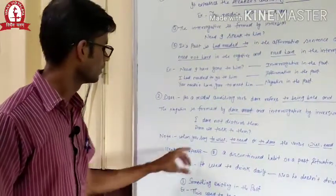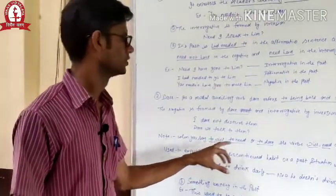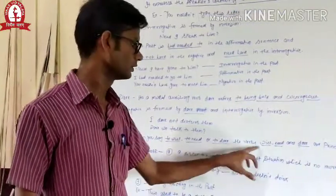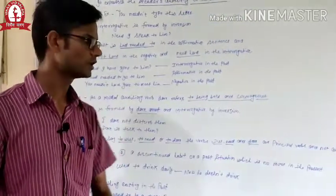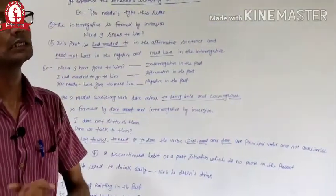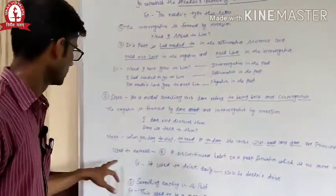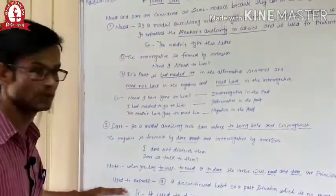Note here, one thing: when you say to need or to dare, the verbs like need and dare are principal verbs and not considered as auxiliaries. And now we have to discuss the last topic of modals, which is used to.